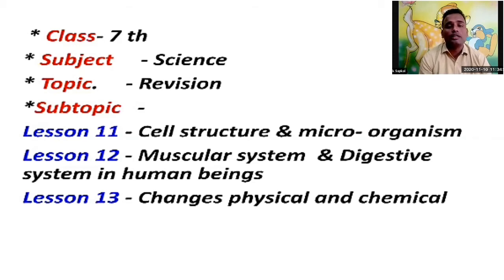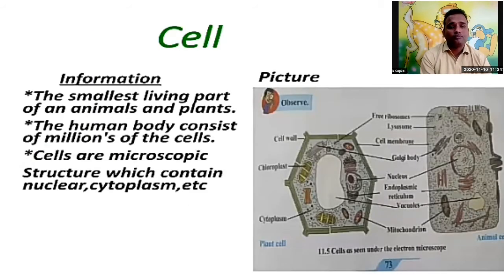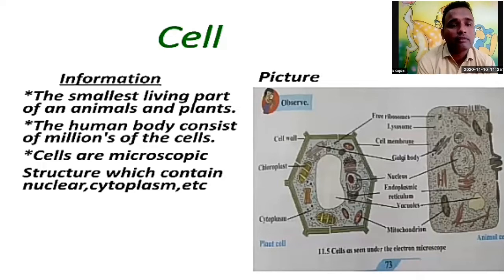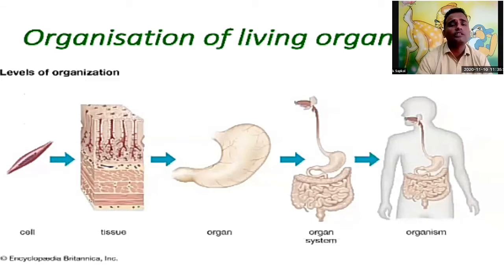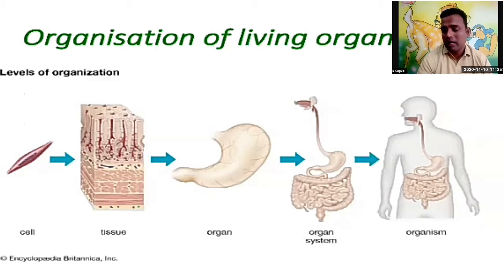The same way, about the human being — there is a structure of our human body. How the organization of living things works, how our body is formed. First of all, the smallest thing is a cell. Whenever many cells come together, they form a tissue.